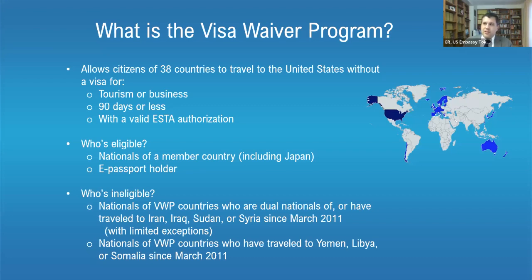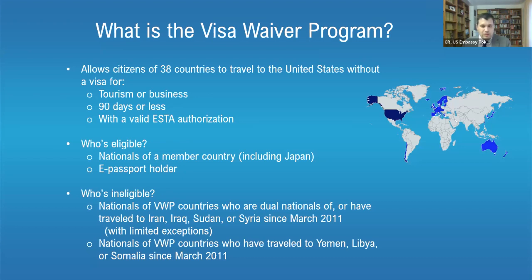Now let's talk about the visa waiver program — for people who want to visit the U.S. and not stay there. If you're Japanese or one of 37 other nationalities, you can use the visa waiver program for visits of 90 days or less for tourism or business. You need a valid ESTA authorization and an e-passport — the chip logo on the cover indicates it's an e-passport. Note that prior travel to certain countries or dual nationality with certain countries may disqualify you from the visa waiver program, in which case you can apply for a visa.